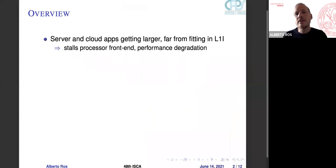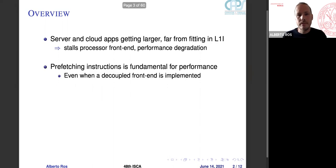Server and cloud applications are getting larger, and they are far from fitting in the L1 instruction cache. The latency required to fetch instructions is increasing, and this causes stalls in the processor frontend, and ultimately performance degradation. Prefetching instructions is a fundamental technique for performance, even when a decoupled frontend which fetches instructions ahead of time based on information from the branch predictor is important.